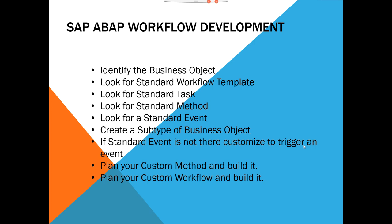An important best practice: always give as much data as you can in the workflow task, in the email, and in the inbox — so that the approver doesn't need to go to a transaction code to check information. This especially matters at the C-level, where executives need to see all relevant information inline: where it came from, who approved it before, and all supporting details. This is what separates a real workflow expert from a beginner.